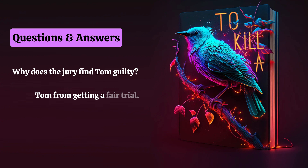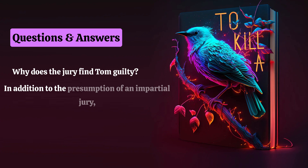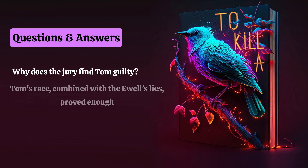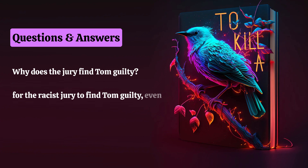Another reason the jury finds Tom guilty is because both Mayella Ewell and her father Bob both perjured themselves on the stand. In addition to the presumption of an impartial jury, the justice system operates on the assumption that witnesses will tell the truth, the whole truth, and nothing but the truth after being sworn into testimony. But both Mayella and Bob lied rather than admit that Mayella tried to kiss Tom. Tom's race, combined with the Ewells' lies, proved enough for the racist jury to find Tom guilty, even in the face of overwhelming evidence of Tom's innocence.